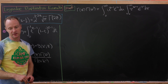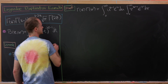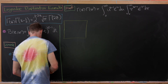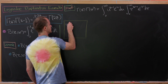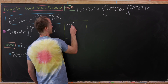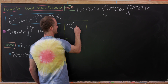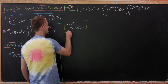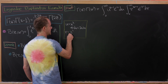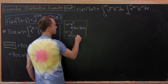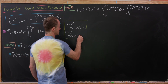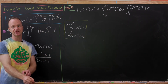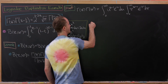Now we'll make a change of variables in each of these variables before we push them together. We'll take u and replace it with x², which means du will be replaced with 2x dx. And we'll take v and replace it with y², meaning dv will be replaced with 2y dy. Notice we pick up a factor of 2 for each integral, giving us an overall factor of 4.